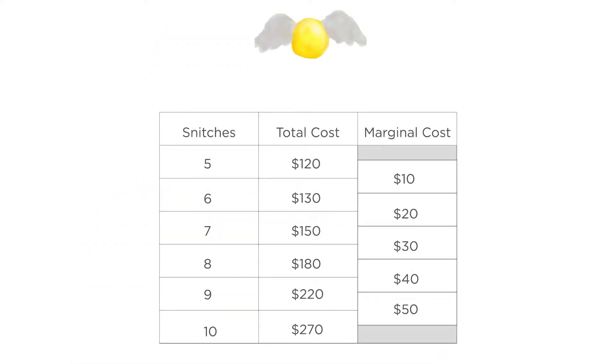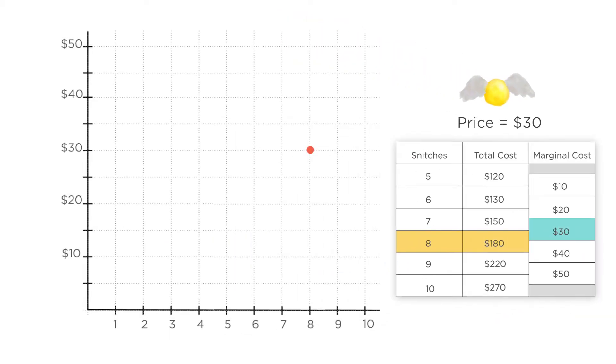Here's the table showing the marginal cost of producing another golden snitch at each level of production from earlier. When the price of snitches was $30, the firm chose to produce eight snitches. This is the point at which price equals marginal cost. Let's plot this point in a graph where the x-axis is quantity and the y-axis is price.